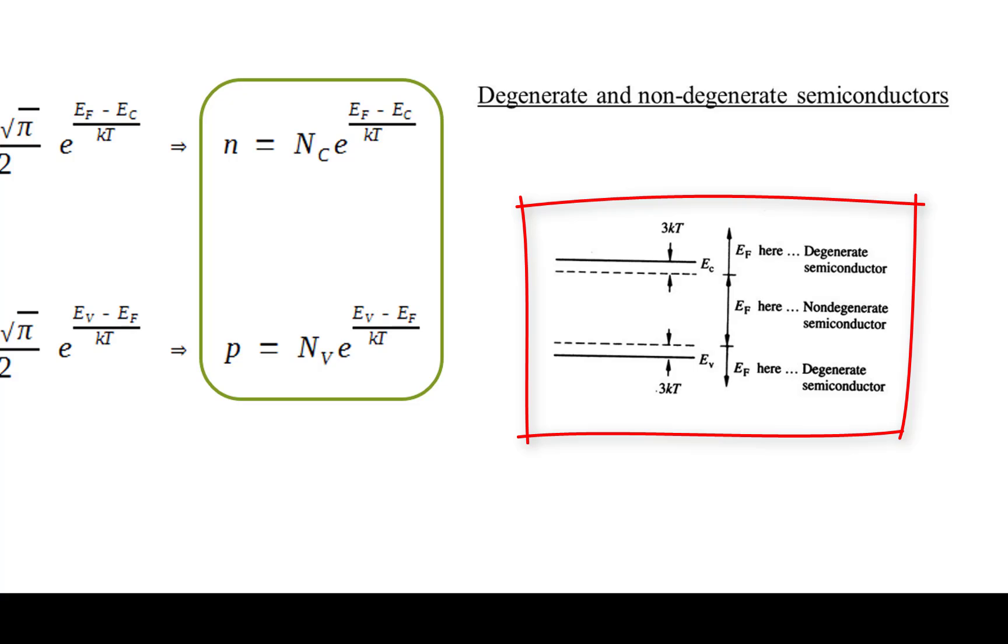Whenever E_F lies in the band gap closer than 3kT to either band edge, E_C or E_V, or actually penetrates one of the bands, the semiconductor is said to be degenerate.